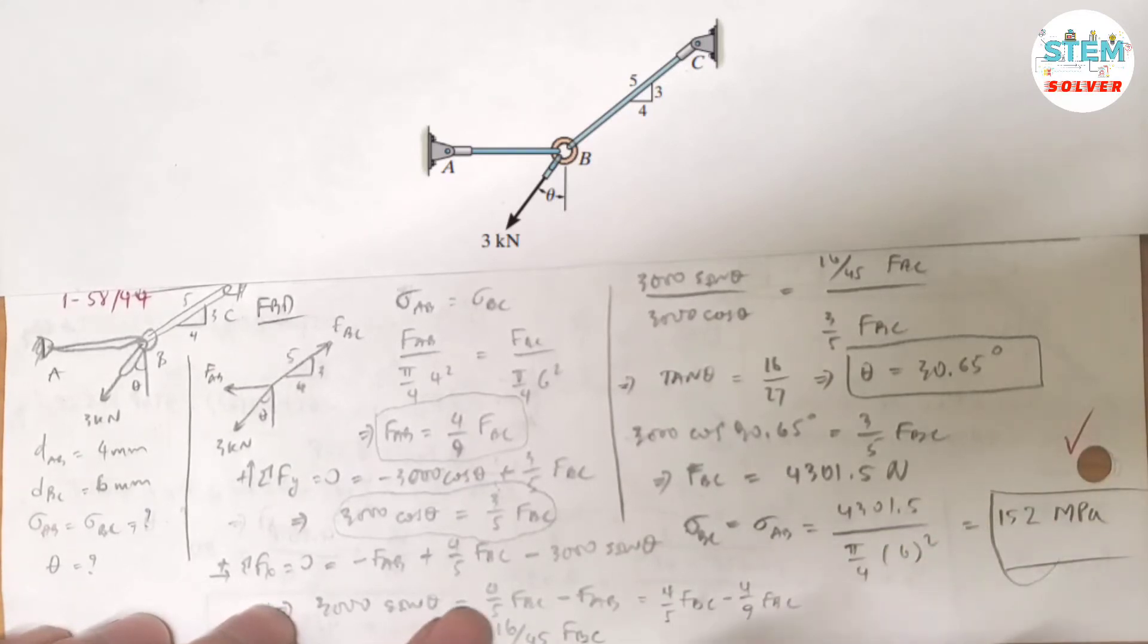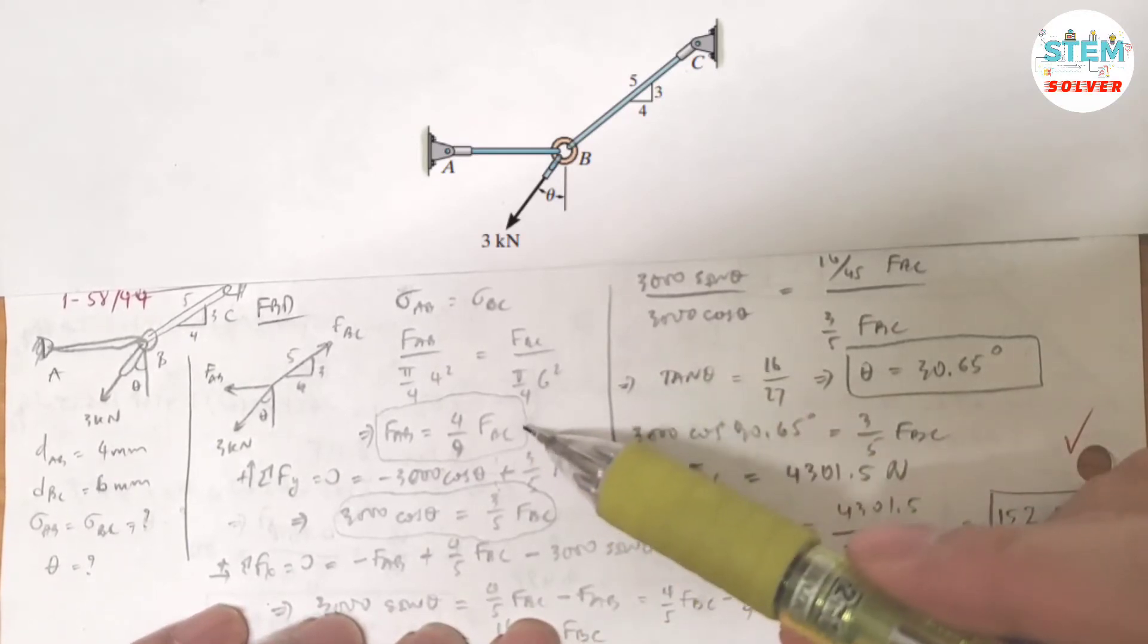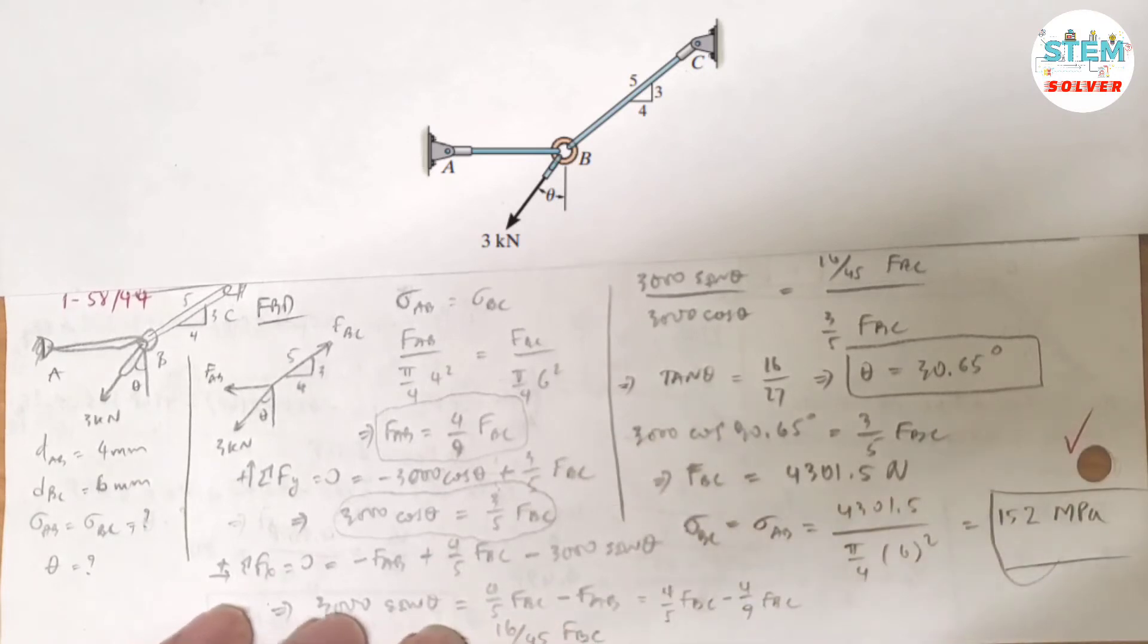And you have two unknowns here, FAB and FBC. But previously we know that FAB equals 4/9 FBC. So I can replace FAB by 4/9 FBC, which gives me 16/45 FBC.